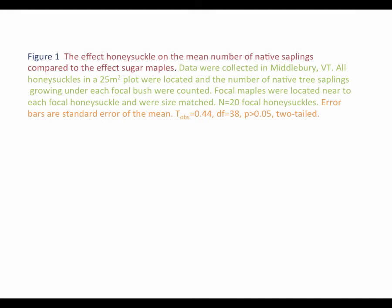Here's the legend we came up with. You've got the header, Figure 1. The title uses the effect of honeysuckle on the mean number of native saplings compared to the effect of sugar maples. We've got information on data collection — location, honeysuckles (and if I were to improve this, I would include the Latin genus and species name for honeysuckle), the size of the plot at 25 meters squared, that all honeysuckles were used, the number of native tree saplings counted as my y-variable, how we located the matched maples, and sample size. For this graph, we didn't include when the data were collected — fall or spring — because that doesn't matter, as we could have done the same study in either season with equivalent results.